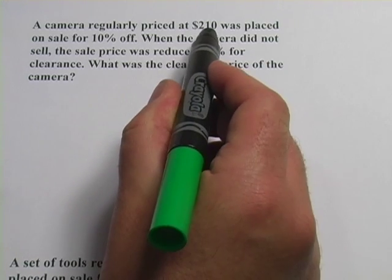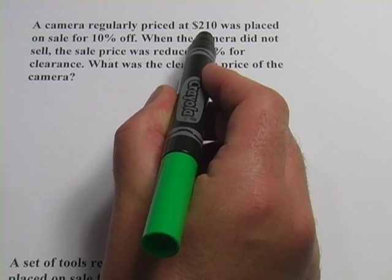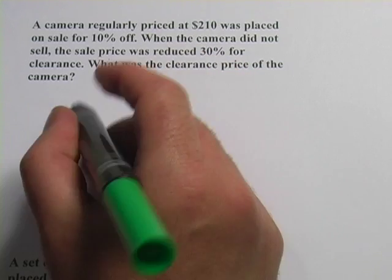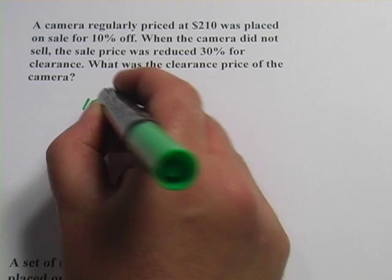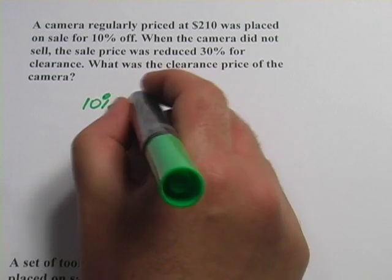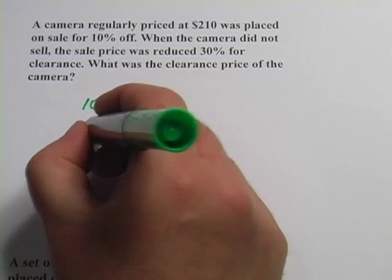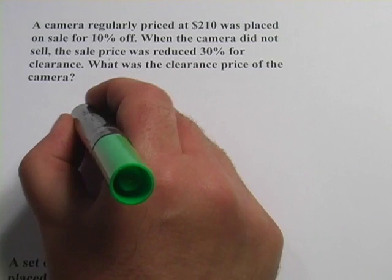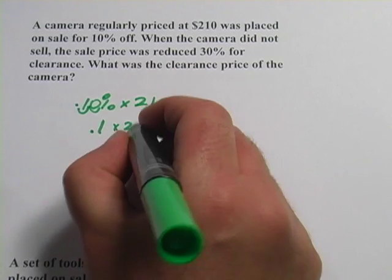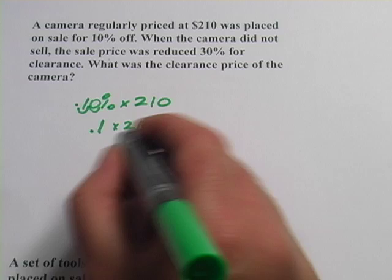So if I'm going to take 10% off $210, I want to figure out what is 10% of $210. 10% of, or multiply, 210. That's .1, because I moved my decimal place over two, times 210. So that's going to be $21.